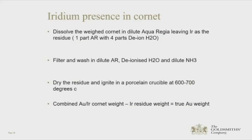In the nitric acid parting process, rhodium, ruthenium, and iridium are practically unattacked by nitric acid in any significant amounts, so they tend to be retained in or on the final gold cornet — fairly easy to see as a black residue, which would be part of the final weight of the cornet. Quantitative determination of these metals is tricky. One approach, certainly for iridium, is by separating techniques: after the cornet's been weighed, dissolve it in dilute aqua regia to digest the gold, leaving the iridium as an insoluble residue. Filter it, wash it with dilute aqua regia, deionised water, and dilute ammonia. After drying the residue, ignite it in a porcelain crucible; the iridium can then be weighed and subtracted from the combined weight of the gold-iridium cornet.